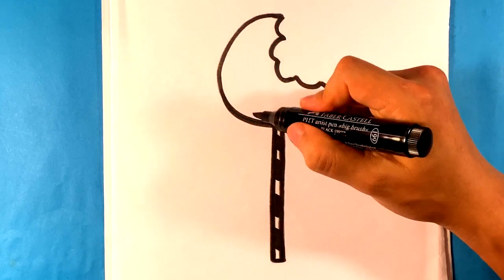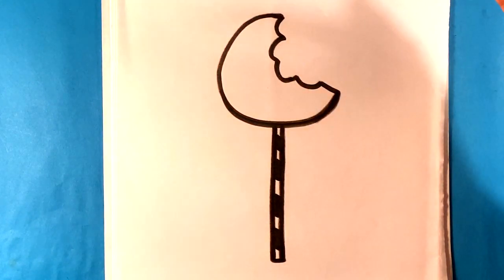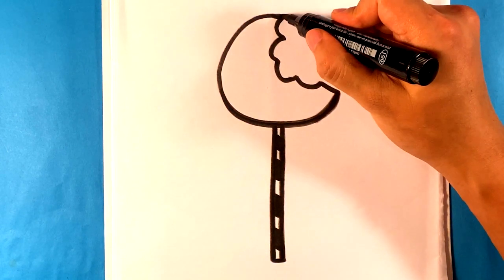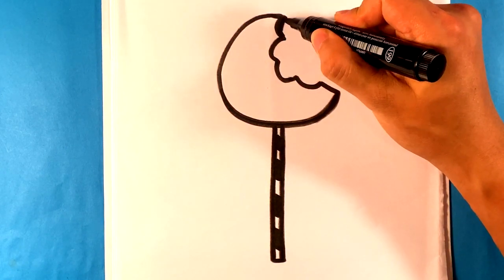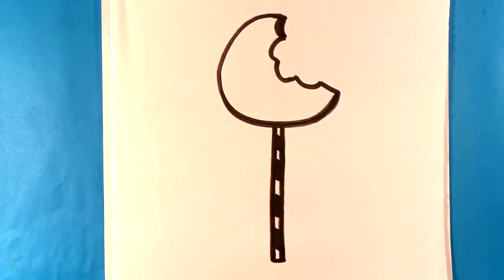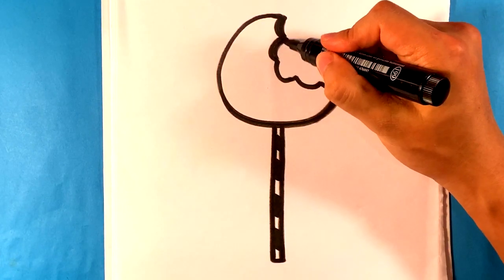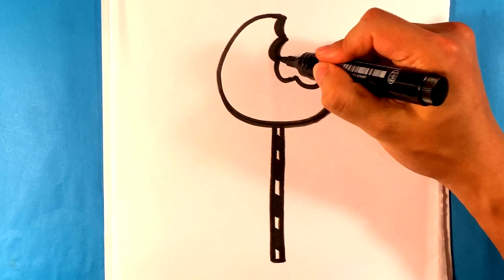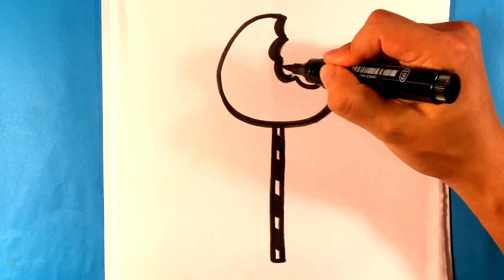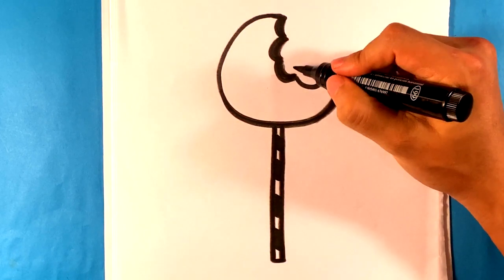All right, just kind of fixing up my lines here. That's kind of important. And then what I want to do is I want to give a little bit of a darker area here to make it look like it has depth when someone bit into it.